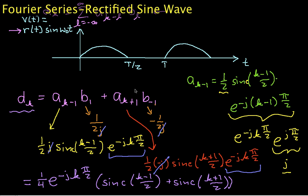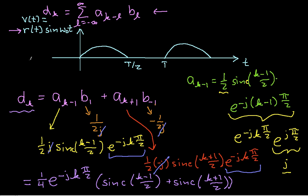Hello and welcome to part two of this video in which we are finding the Fourier series coefficients of a rectified sine wave. In part one, we set up the problem and showed how we were going to build this rectified sine wave in such a way that we could use the properties of the Fourier series coefficients to compute them without actually having to work any integrals. We worked our convolution, got this expression, and that gives us the d sub k's.